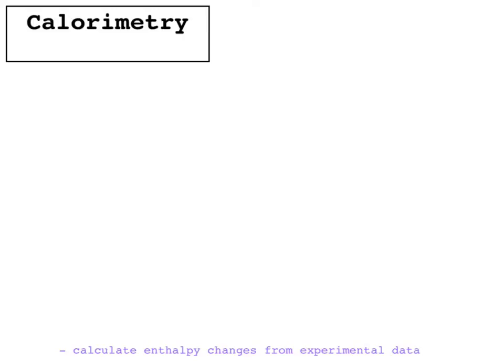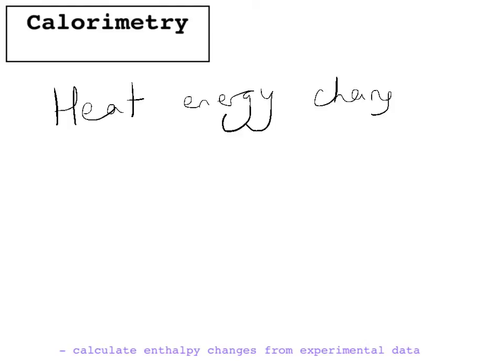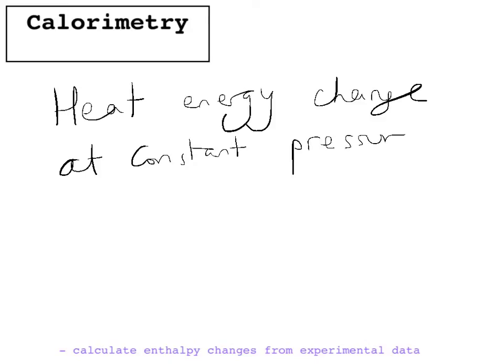First we need to understand what enthalpy change means. Enthalpy change is the heat energy change at constant pressure. It's a negative value if it's an exothermic reaction, and an endothermic reaction has a positive value. The most important thing to remember is that it's measured in kilojoules per mole, which means you have to work out two values to calculate the enthalpy change of reaction.